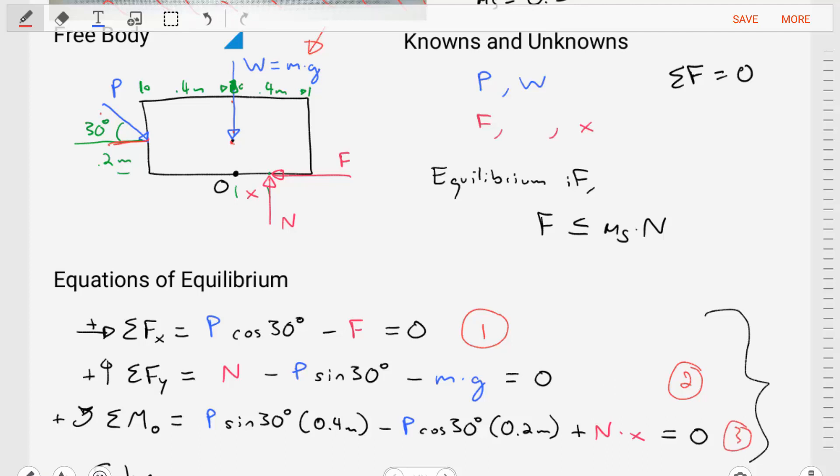Then our third equation is going to be the sum of moments equation. We can choose different points on our crate, but in this problem we decide to choose point O as where we're going to do the sum of the moments. And this is because it's going to eliminate the frictional force F as an unknown in that equation. Let's do the sum of the moments about point O. We can see the line of action of F and W goes through point O. They will not cause rotation so they won't be in the moment equation. If we look at the force P, however, it can be broken down into an x and y component and each of those are at some distance from point O. That means they have a moment arm and they will cause a moment to develop.